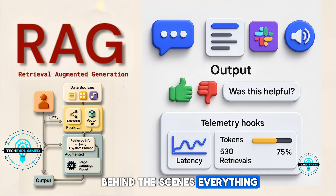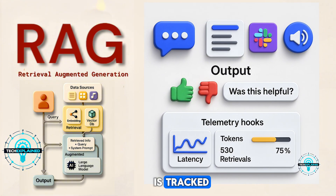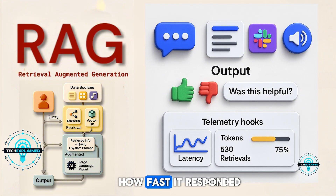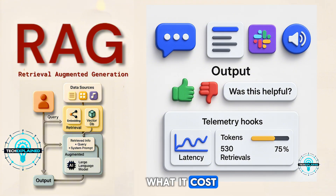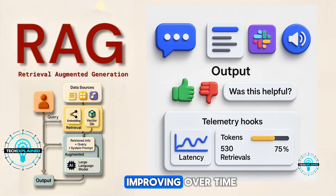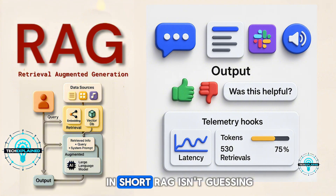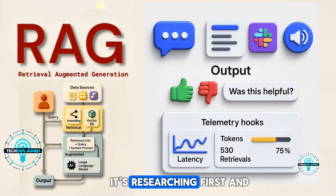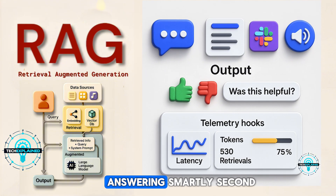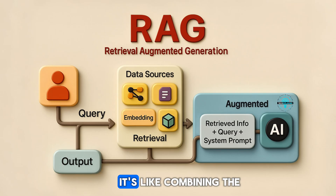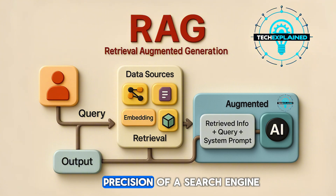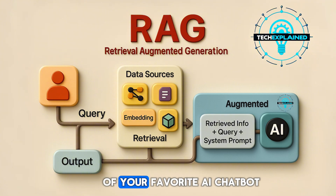Behind the scenes, everything is tracked — how fast it responded, what it cost, and how accurately it retrieved data to keep improving over time. In short, RAG isn't guessing. It's researching first and answering smartly second. It's like combining the precision of a search engine with the conversational ease of your favorite AI chatbot.